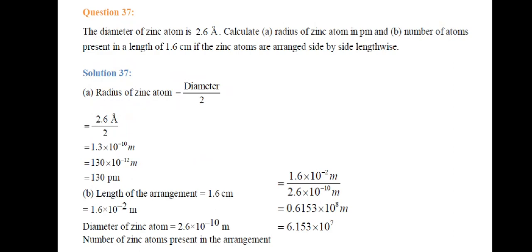Number of atoms = (1.6 × 10⁻² meters) / (2.6 × 10⁻¹⁰ meters) = 0.6153 × 10⁸ = 6.153 × 10⁷ zinc atoms.